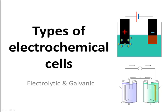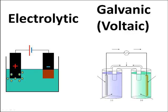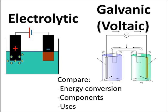There are two types of electrochemical cells: electrolytic cells and galvanic, also called voltaic cells. Look at these pictures and compare the energy conversion between the two. Compare the components between them and what do you think the uses would be of each. Pause until you've done this yourself.